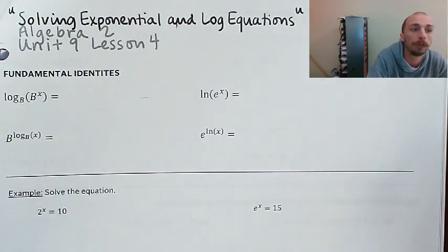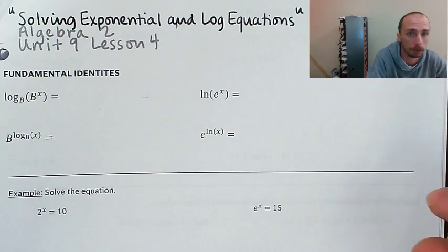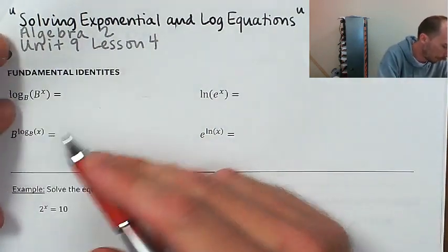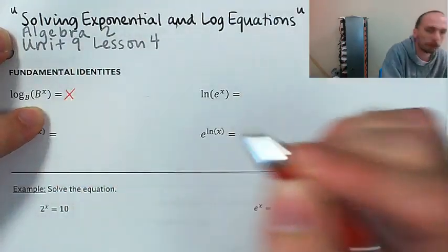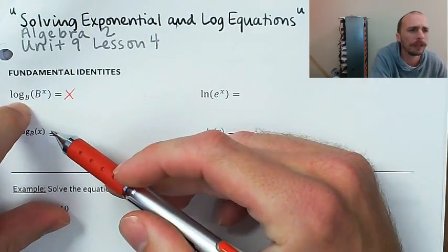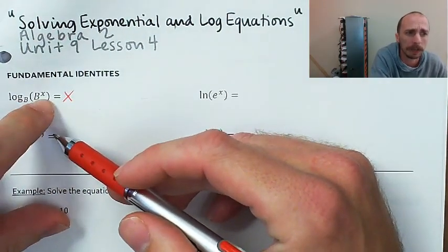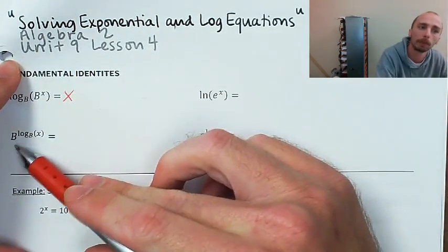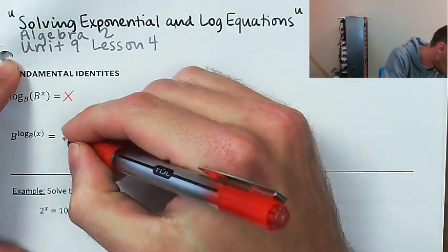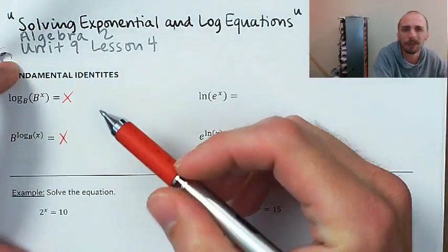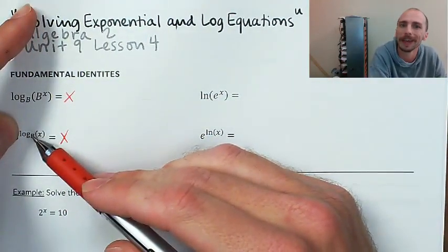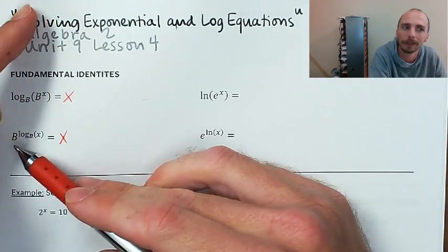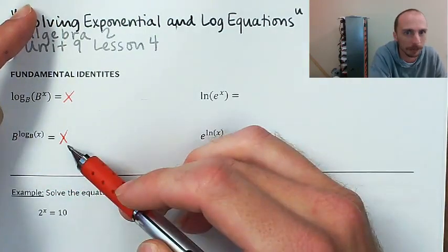The first thing we're going to do is go back to our fundamental identities because those are going to be so important in this lesson. So log base b of b to the x is equal to x. That's one of our two fundamental identities. What this is saying is: what exponent do I put on b to get b to the x? Just x.